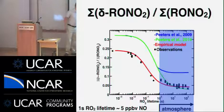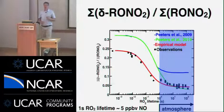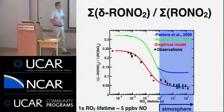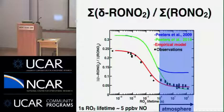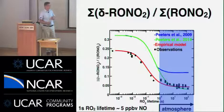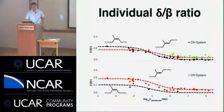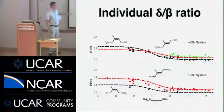Basically one second of RO2 lifetime is about 5 ppb NO, and that rarely happens outside of urban centers. At nighttime it could be hundreds of seconds. So where we want to study the distribution is at the long-lifetime end, where we can see that the delta isomers are not very important, at least for biomolecular chemistry. That simplifies what we need to study — we really only need to study the beta isomers.